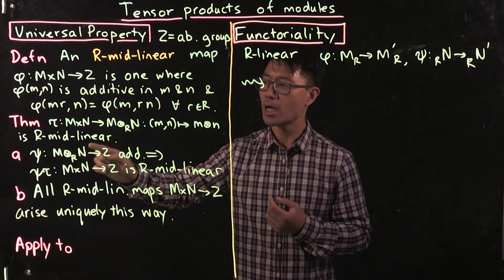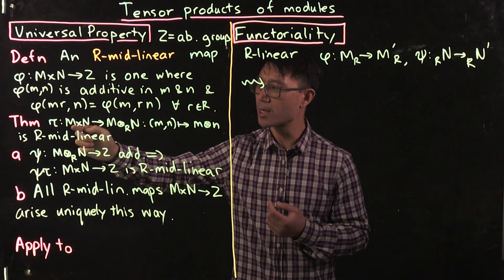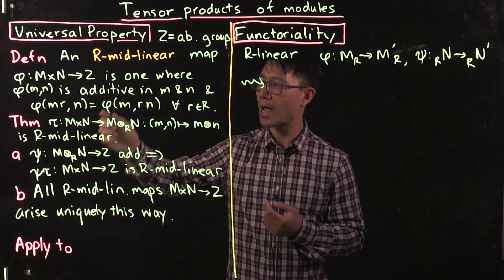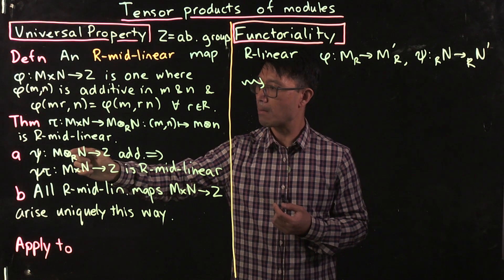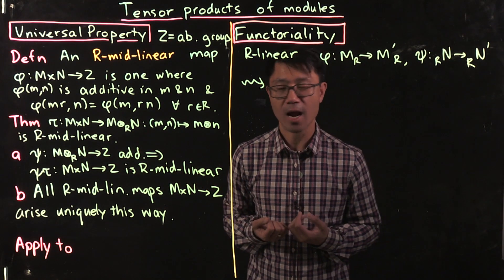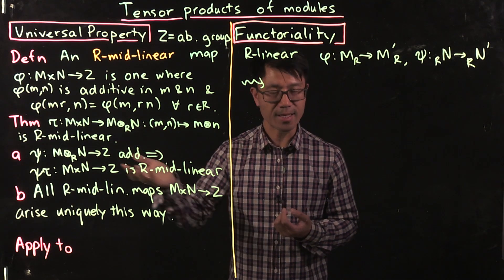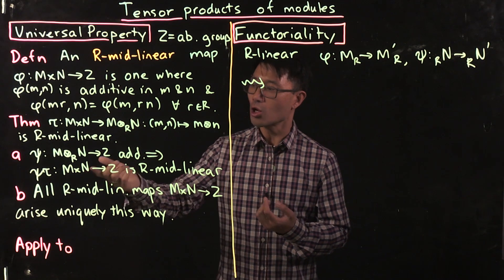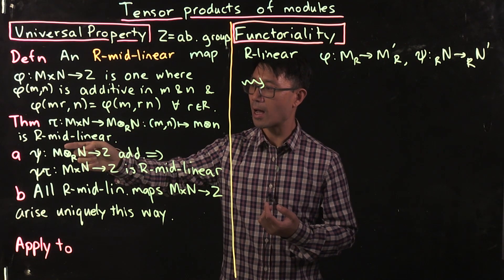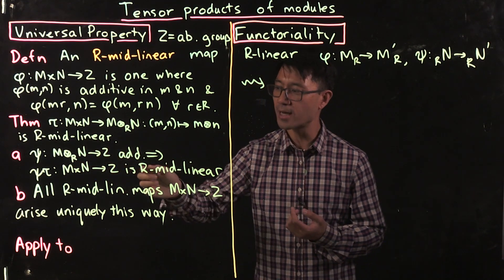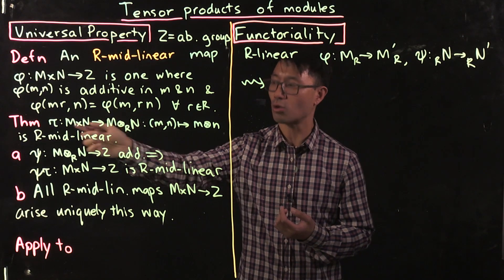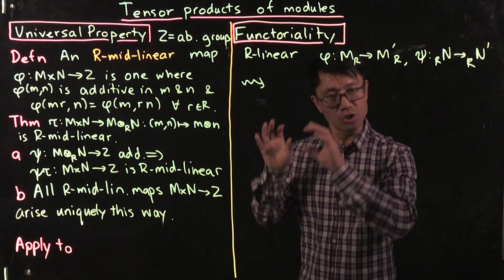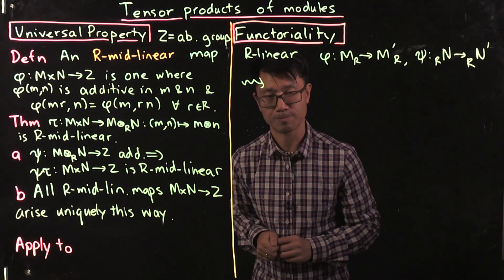What's really nice is that every R-midlinear map from M × N to Z arises uniquely in this way. Given such a map, you can always find a group homomorphism from M ⊗ᴿ N to Z such that it is the composite of this universal R-midlinear map τ with this additive map. That's the universal property, and it's quite easy to prove — you do exactly the same thing as in the case of tensor products of vector spaces.